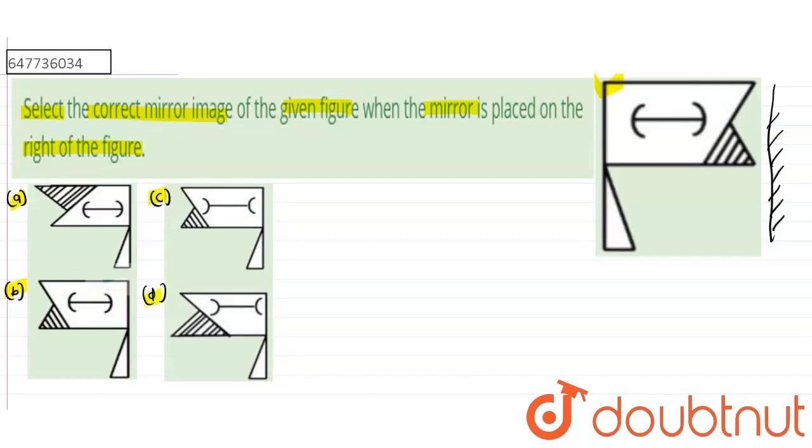So guys, we know that mirror has one important property: Lateral Inversion. So, if we look at the left side of the image...